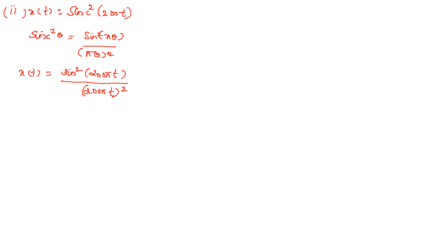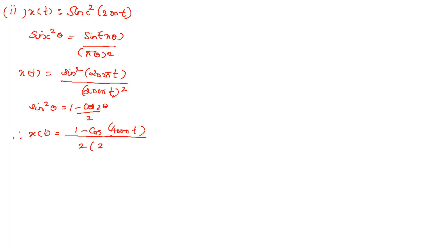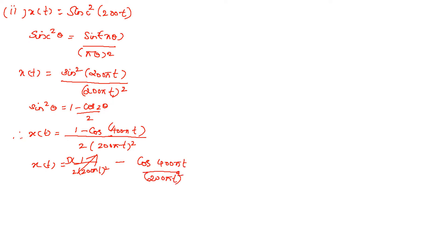Since this is in the form sin²(θ), we use the identity sin²(θ) = (1 − cos(2θ)) / 2. So x(t) = [1 − cos(400πt)] / [2·(200πt)²]. Splitting into two terms gives a DC term and a cosine term with cos(400πt).